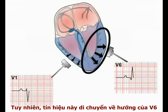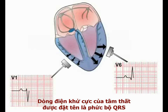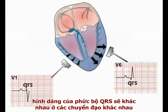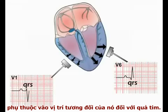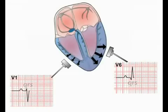In contrast, this signal is moving towards lead V6, producing a strong positive deflection. The flow of depolarising current around the ventricles is recorded as the QRS complex, and the morphology of the QRS complex differs predictably in the ECG leads depending on their position relative to the heart. We'll come back to the precise nomenclature of the QRS complex later.